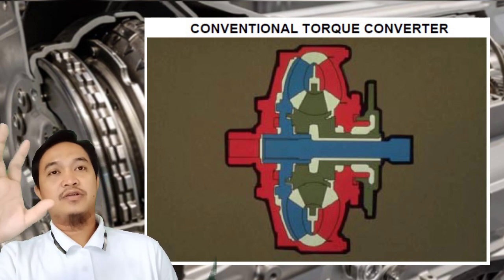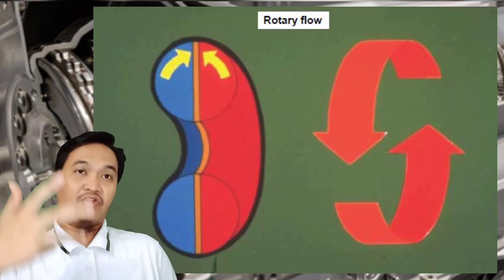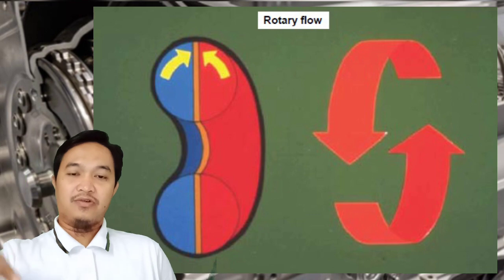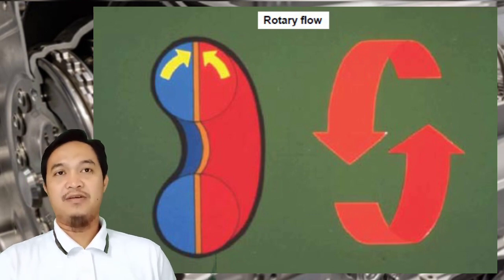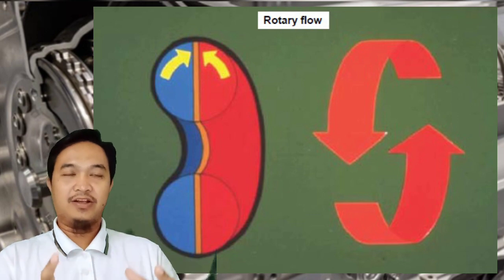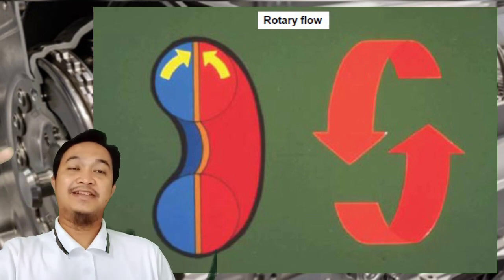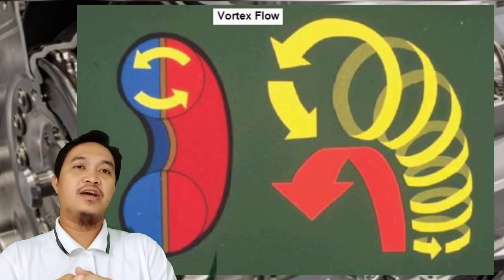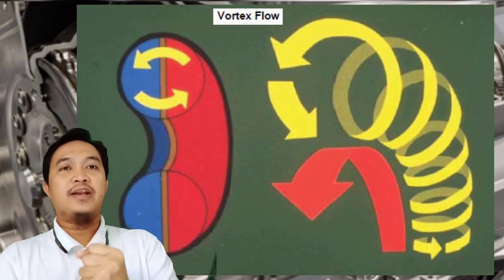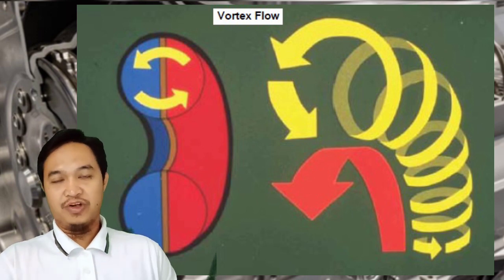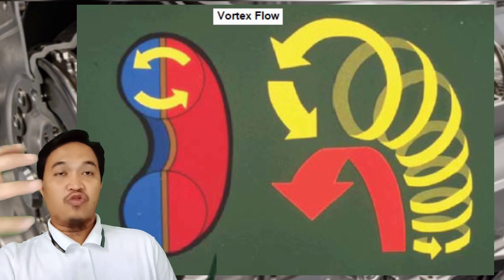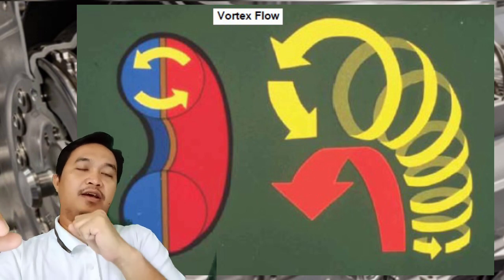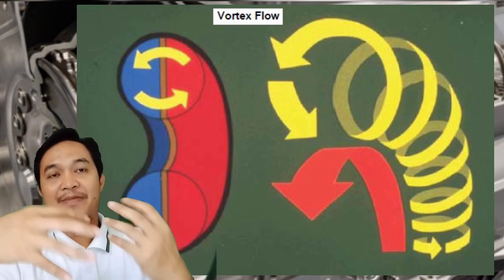Di dalam torque converter terdapat rotary flow, yaitu aliran oli yang membentuk satu arah putar mengikuti arah putaran engine, searah jarum jam atau berlawanan. Kemudian ada vortex flow, yaitu aliran oli yang fungsinya memukul sudut-sudut dari turbin sehingga turbin ikut memutar. Vortex flow inilah yang membuat turbin memutar karena dipukul oleh oli bertekanan yang dioperasikan oleh pump atau impeller.